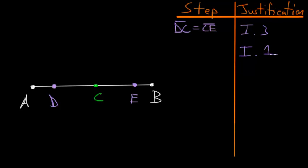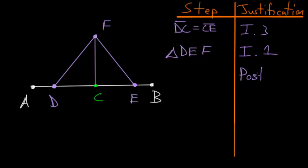Next we want to use Book 1 Proposition 1 to construct an equilateral triangle between the points DE and a third point which we'll call F. Let's construct this triangle between DE and this point up here which we'll call F. Then we want to construct a line between the points F and C, and we can do this using Postulate 1.